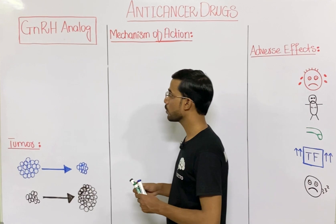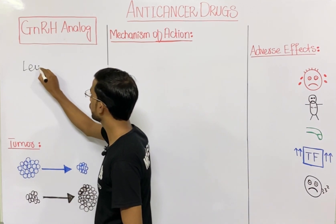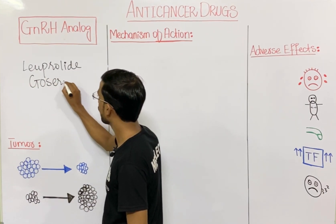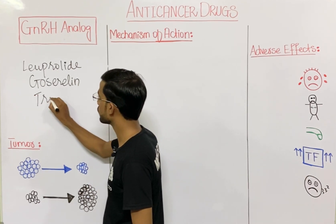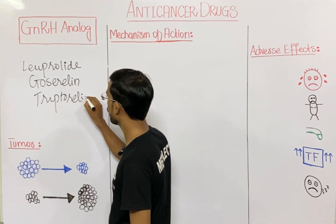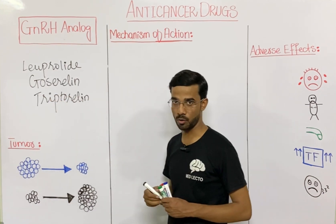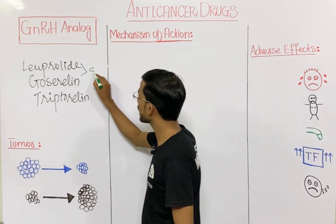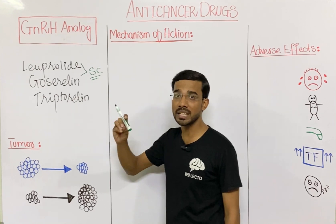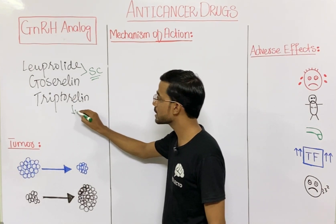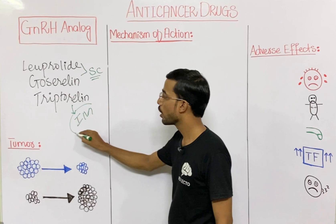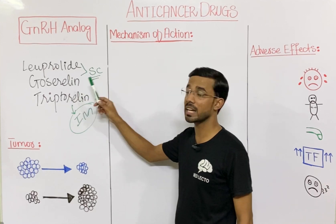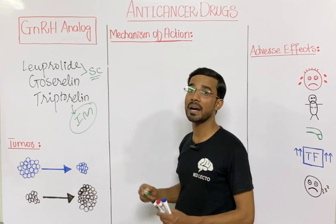We will discuss leuprolide, goserelin, and triptorelin. Leuprolide and goserelin are taken by the subcutaneous route — through the skin — while triptorelin is taken by the intramuscular route. We will discuss the importance of these different administration routes.